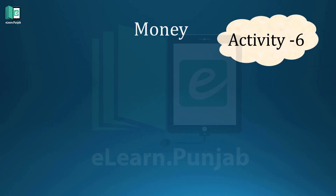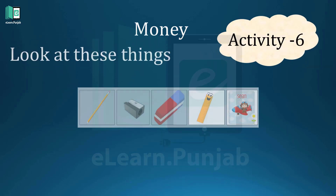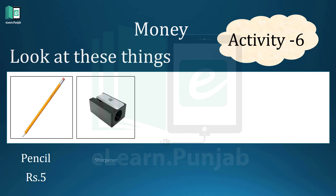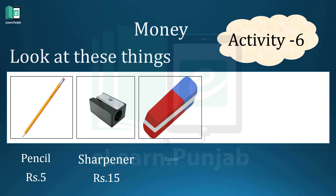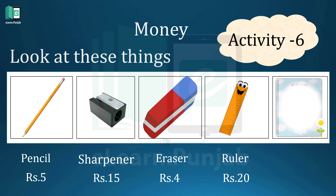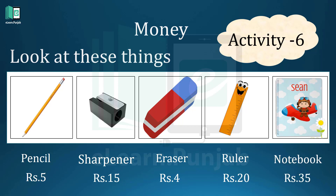Activity 6. Look at these things. Number 1: Pencil, price Rupees 5. Number 2: Sharpener, price Rupees 15. Number 3: Eraser, price Rupees 4. Number 4: Ruler, price Rupees 20. Number 5: Notebook, price Rupees 35.